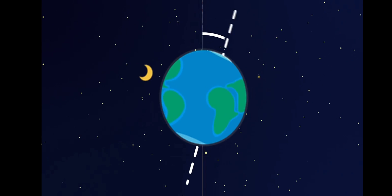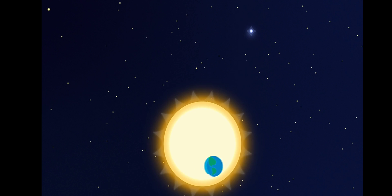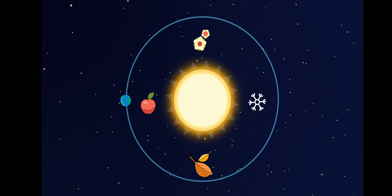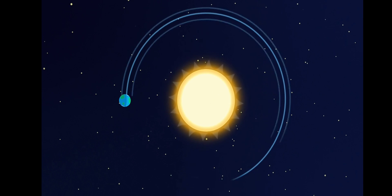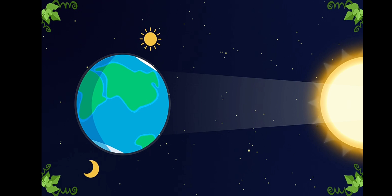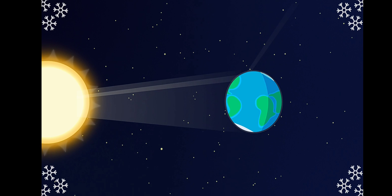This axis is tilted and is always pointed in one direction, towards Polaris. Because of this tilt, the earth positions its sides toward the sun differently in each season. When solar rays fall straight, it gets hotter and summer comes. If the rays fall at an angle, the heat is lower and winter comes.